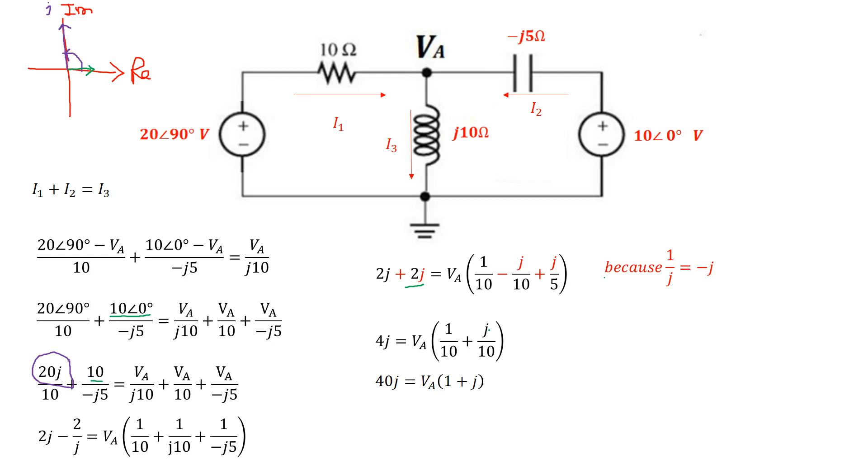40j is the same as saying 40 angle 90 degrees. And 1 plus j, if I change that into polar coordinates. So 1 plus j into polar coordinates is basically square root of 2 with an angle of 45 degrees. So I basically convert these Cartesian coordinates to polar coordinates. And that's what I get. So VA is essentially 40 angle 90 degrees divided by square root of 2, angle 45 degrees.